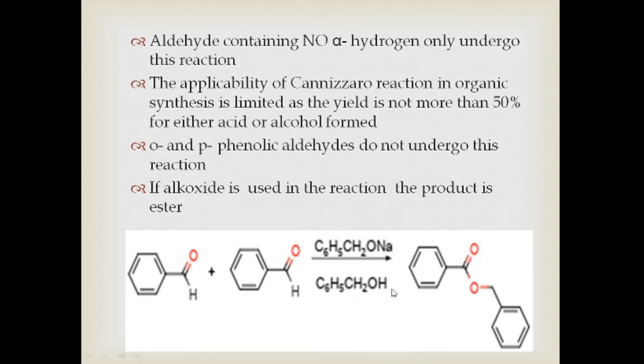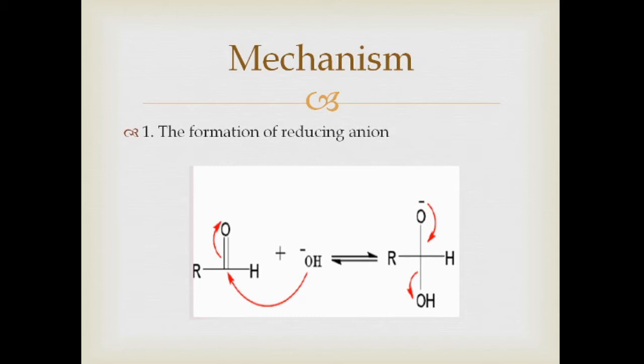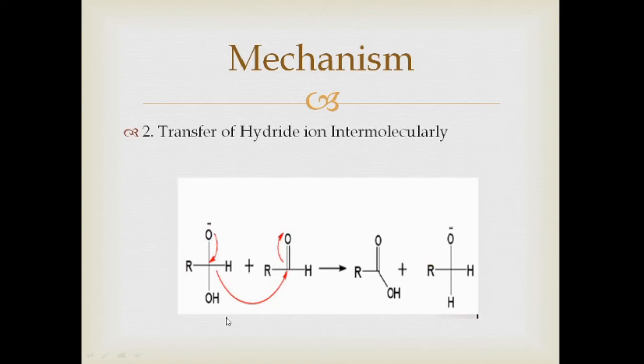Coming on to the mechanism of Cannizzaro's reaction: it involves the formation of a reducing anion by the interaction of the aldehyde with OH. The anion next transfers the hydride ion intermolecularly to the carbonyl carbon of another molecule, forming a carboxylic acid and an alkoxide ion. You can see the transfer of hydride happening from one molecule to another.